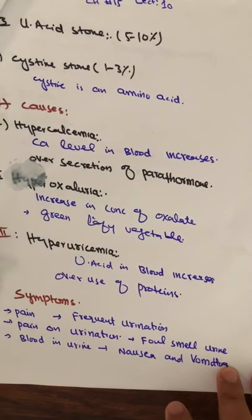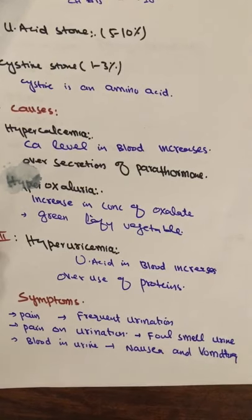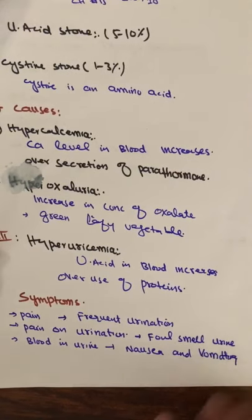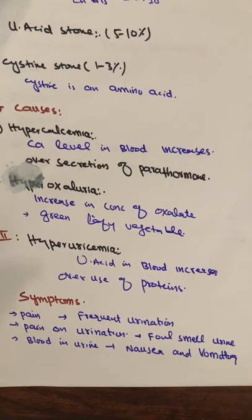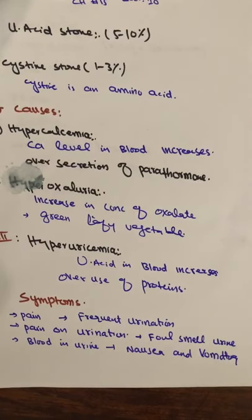The third type of stone is uric acid stone. Uric acid stones are 5 to 10% of kidney stones. This is uric acid deposition. Uric acid comes from protein metabolism in our body. People who consume more animal protein with less water intake develop elevated uric acid, which leads to stone formation.